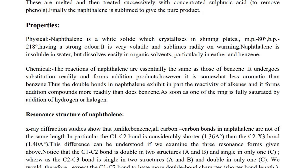Physical properties: naphthalene is a white solid which crystallizes in shining plates, with a melting point of 80°C and boiling point of 280°C. It has a strong odor, is very volatile, and sublimes readily on warming. Naphthalene is insoluble in water but dissolves easily in organic solvents, particularly ether and benzene. Chemical properties: the reactions of naphthalene are essentially the same as those of benzene — it undergoes substitution readily and forms addition products. However, it is somewhat less aromatic than benzene, and the double bonds exhibit in part the reactivity of alkenes.